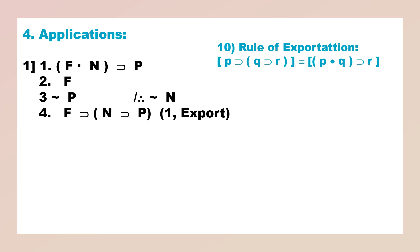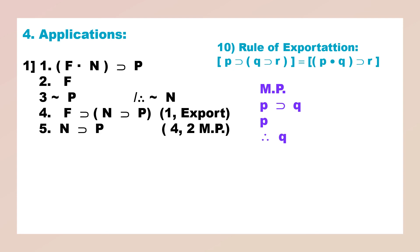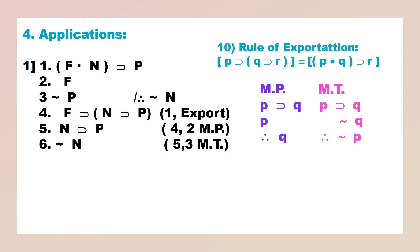Let us see the application. We have F·N implies P. Now, what you can do is apply the rule of Exportation and we will get F ⊃ (N ⊃ P). Now you can apply the rule of M.P. to get N ⊃ P. The negation of the consequent is with you, so you can get the negation of the antecedent by M.T. Thus we have arrived at the conclusion.